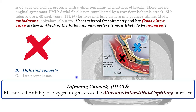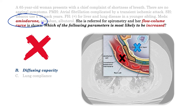Diffusing capacity measures the ability of oxygen to get across the alveolar surface, through the interstitium, and into the pulmonary circulation. This alveolar-interstitial-capillary interface is measured by diffusing capacity. Coming back to the idea that the patient was on amiodarone causing restrictive disease, that would suggest the diffusing capacity — by virtue of interstitial fibrosis — would have been decreased in this patient. But they were looking for something that was increased.